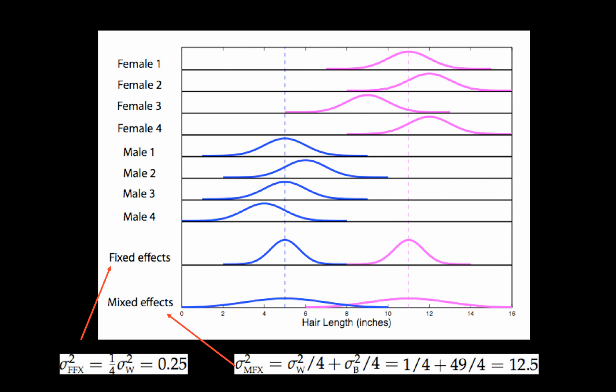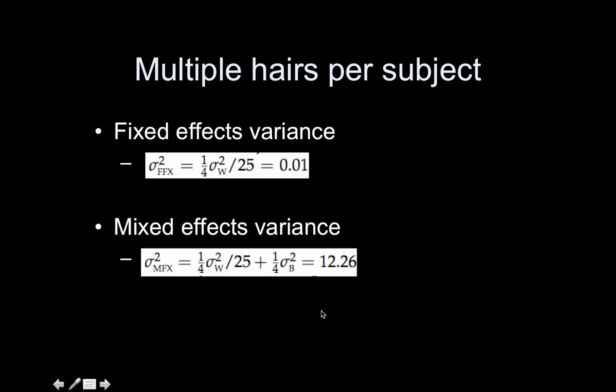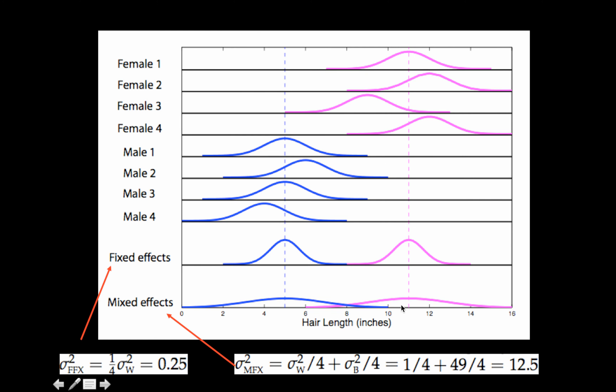Now the mixed effects distributions look like this. So the fixed effects had a variance of 0.25. The mixed effects is 12.5. It's much bigger. So now you can see these two distributions overlap a bit. And so our conclusion is different. The conclusion here is that based on these data, we cannot conclude that male hair length is shorter than female.